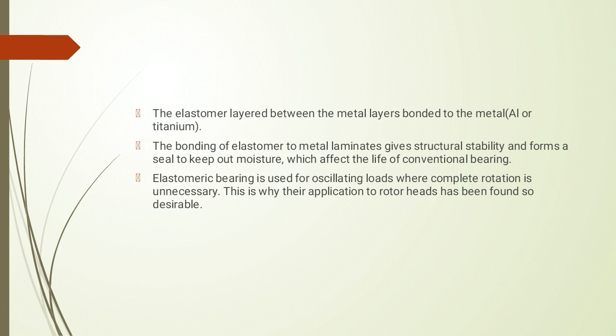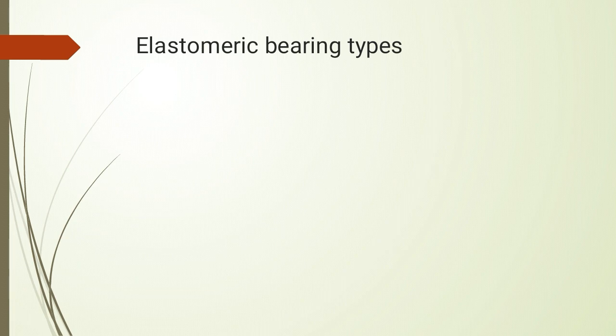पहले rotor blade assembly में उन्हीं hinges का इस्तमाल होता था जिनको lubrication भी देनी पड़ती थी और उनकी वजह से weight भी बढ़ जाता था। After some time we came to know about elastomeric bearings। हमने elastomeric bearing का इस्तमाल शुरू किया जिसमें lubricant की property भी थी — तो lubrication oil की ज़रूरत नहीं पड़ी और hinges का heavy weight भी eliminate हो गया।